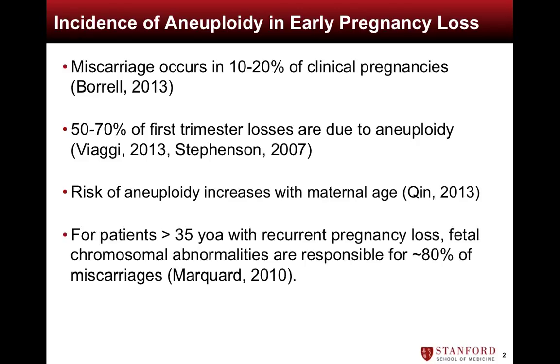In the subset of patients greater than 35 years of age with recurrent pregnancy loss, fetal chromosomal abnormalities are responsible for up to 80% of miscarriages.